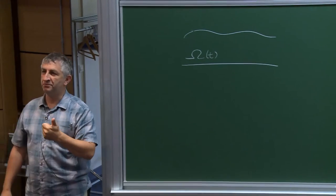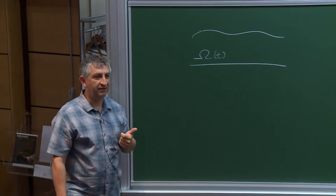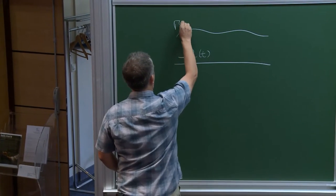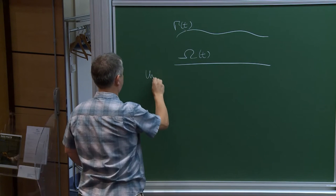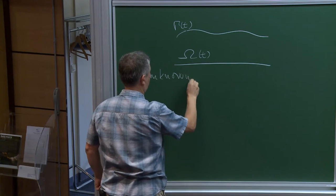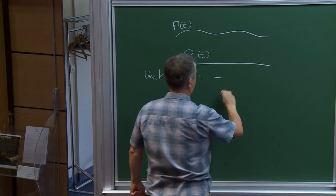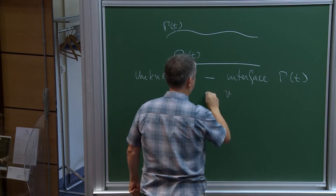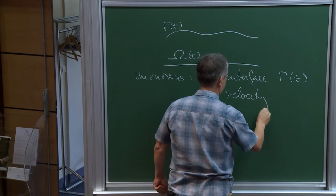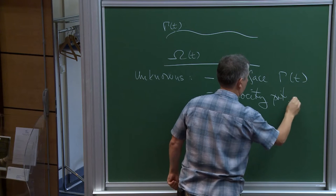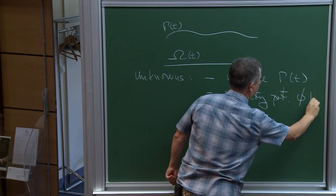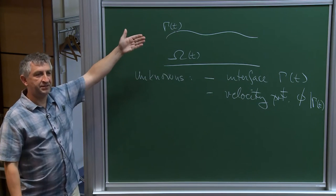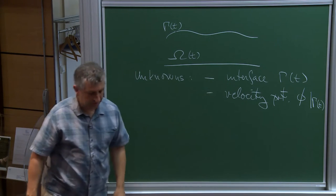On this free interface you're looking at two objects. First, the motion of the interface itself, and second, the velocity potential on this interface. So you have this surface gamma of t, and your unknowns will be: first, the interface gamma of t, and second, the velocity potential phi restricted to gamma of t. So you expect these water wave equations to be a system describing the motion of these two variables.